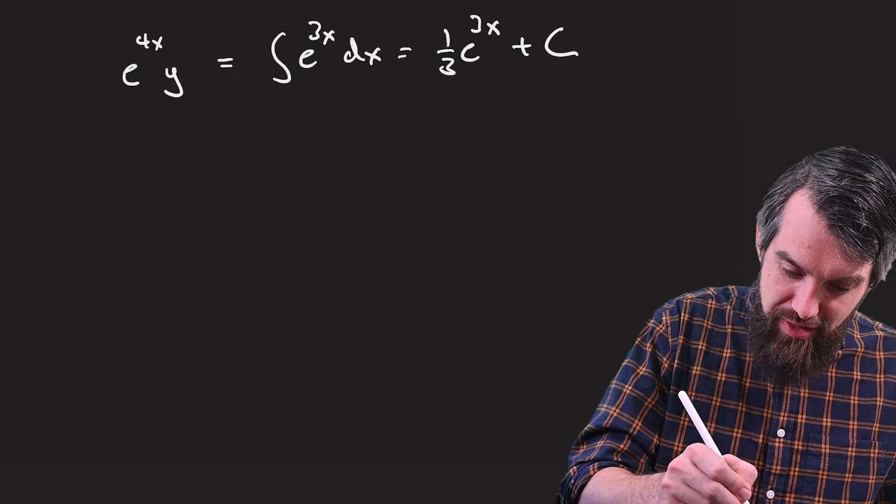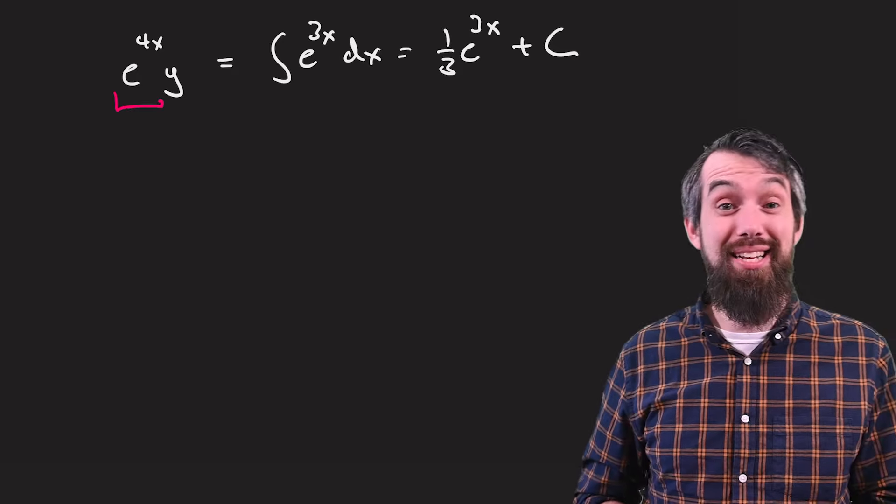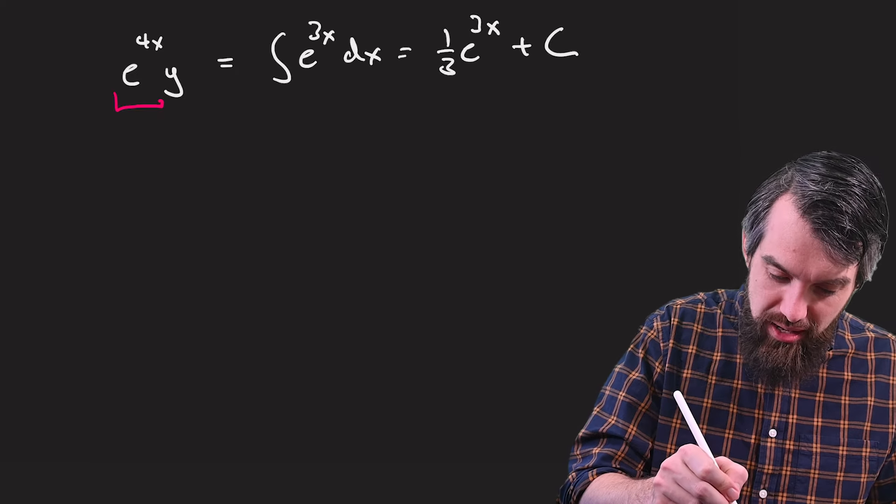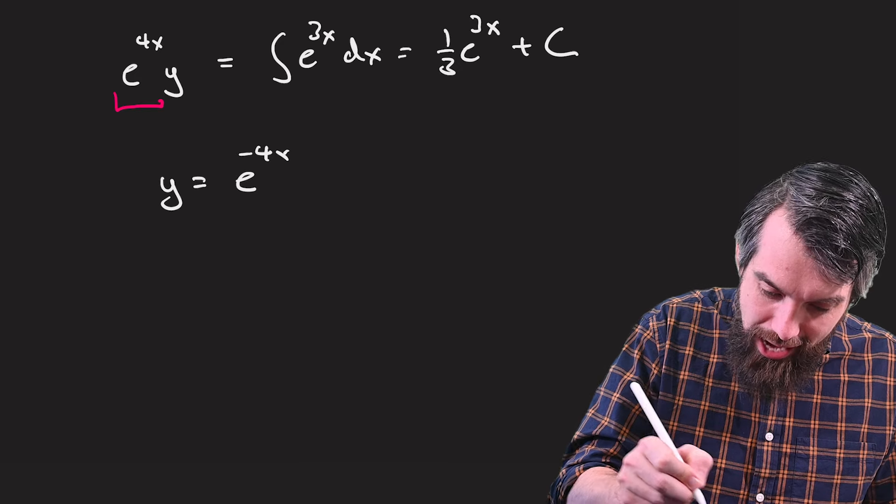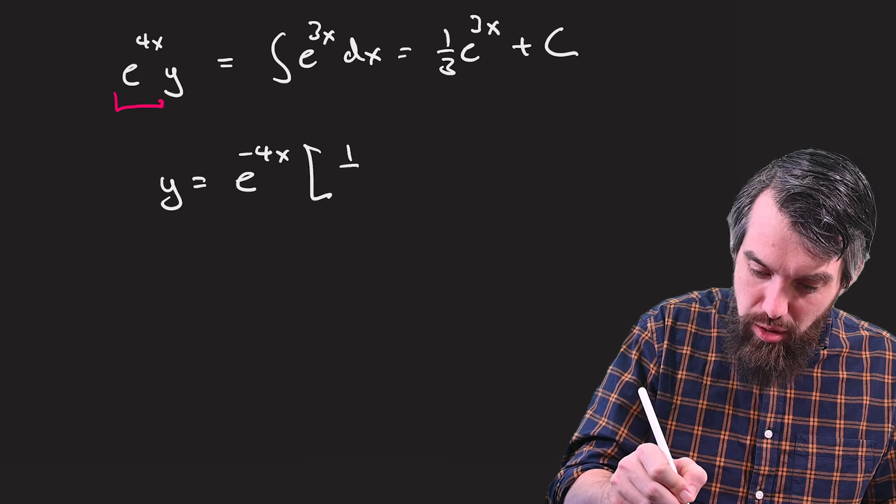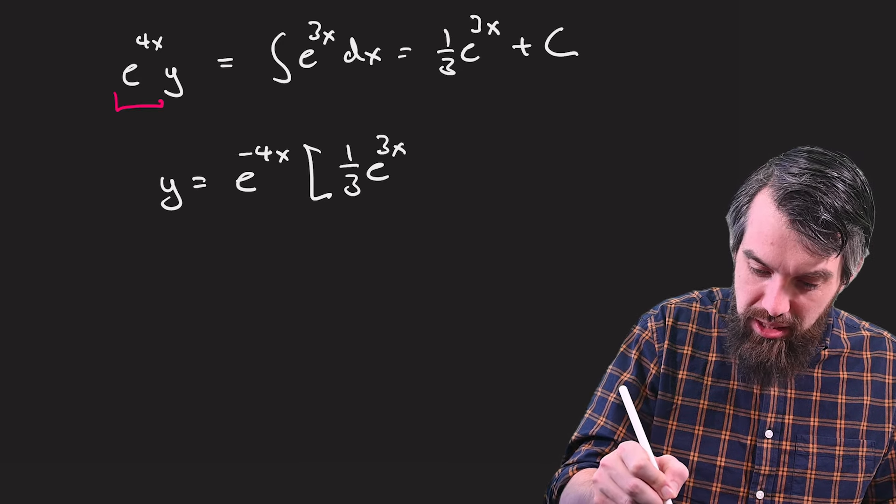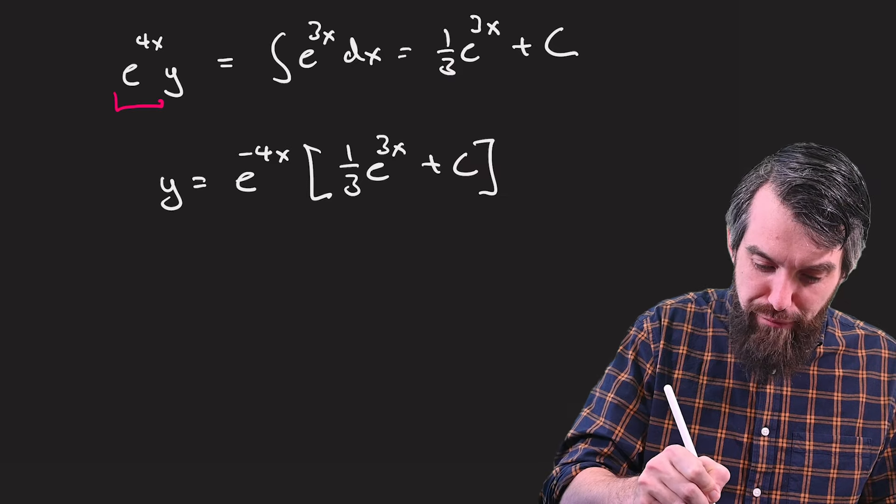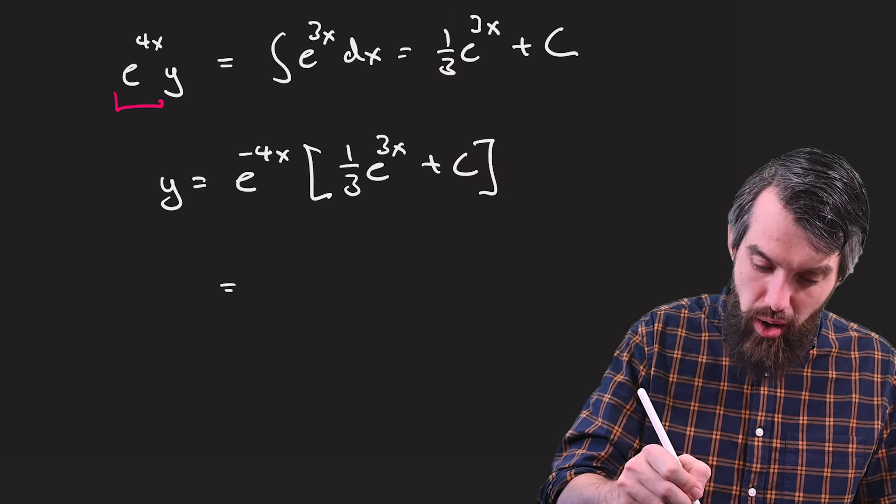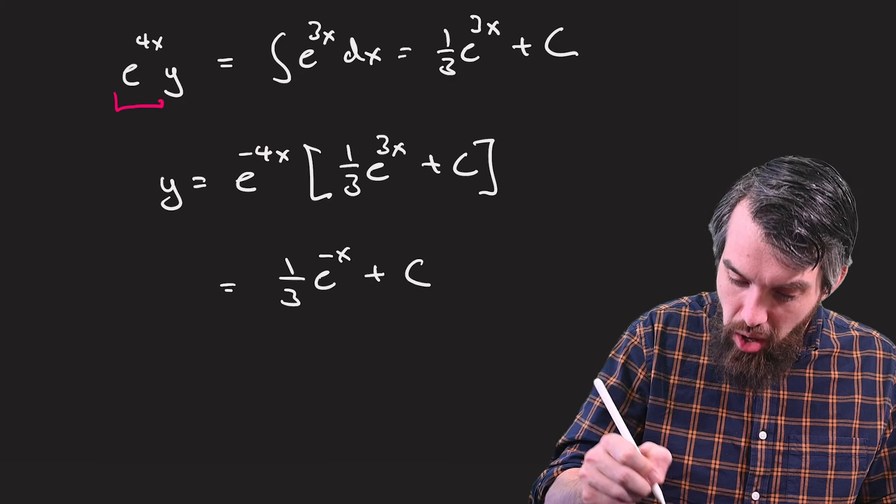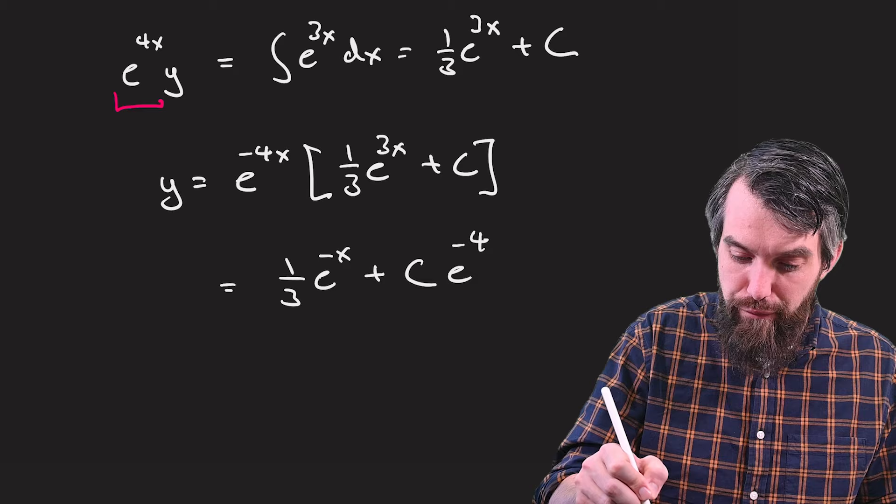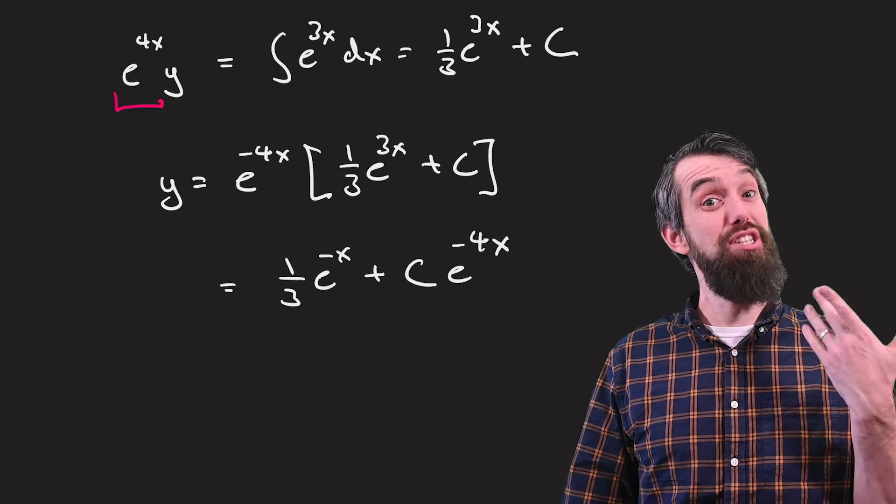Well, final answer. I noticed that I have this e to the 4x stuck still on the left-hand side. I don't want that. And so I'll say that y is going to be e to the minus 4x multiplied by the 1 third e to the 3x plus the C. And if you prefer to distribute this through, that's totally fine as well. You can do 1 third e to the minus x plus a constant times e to the minus 4x. All right, so that's my general solution.